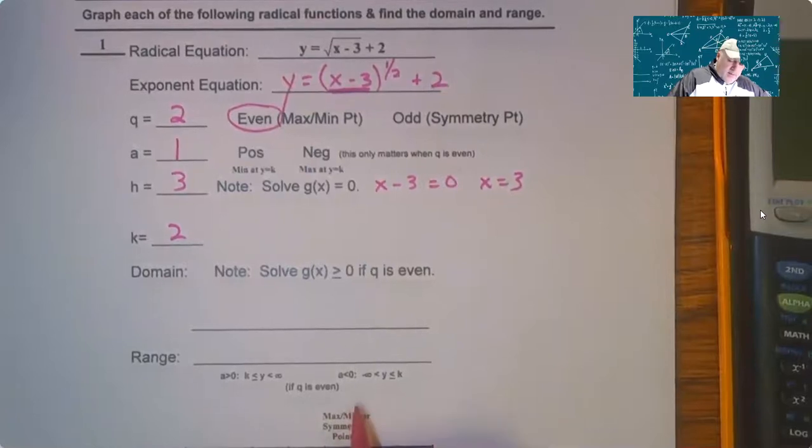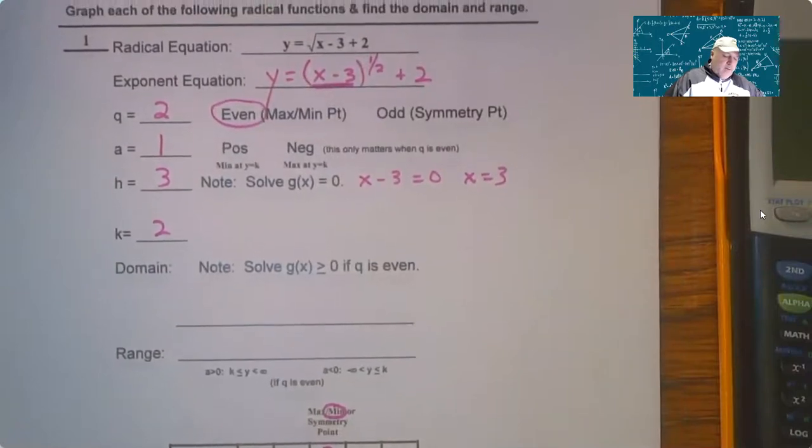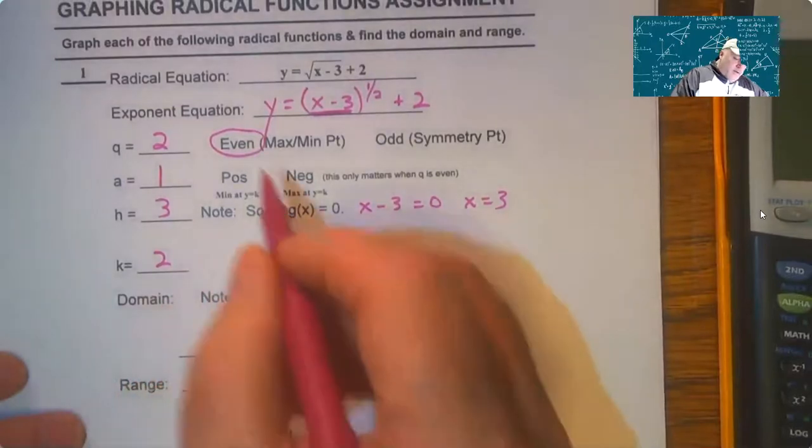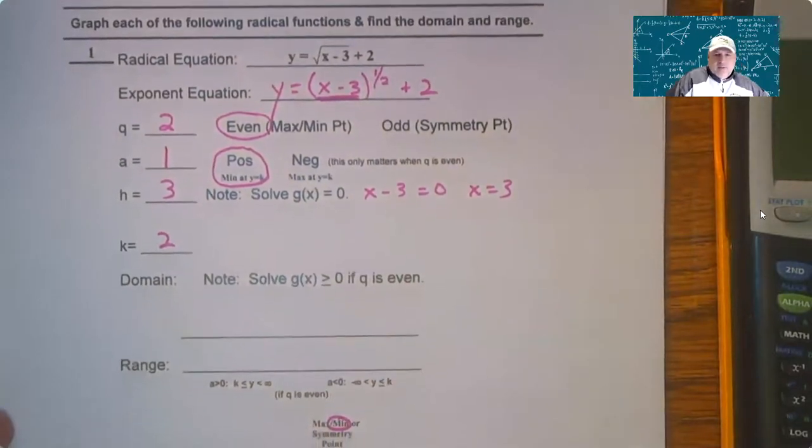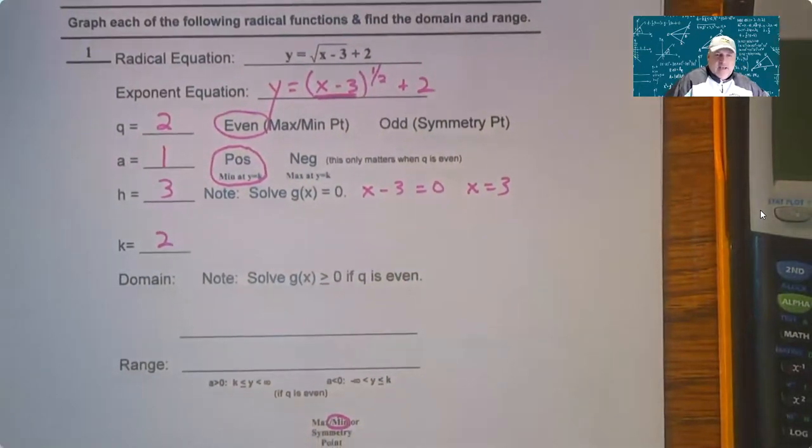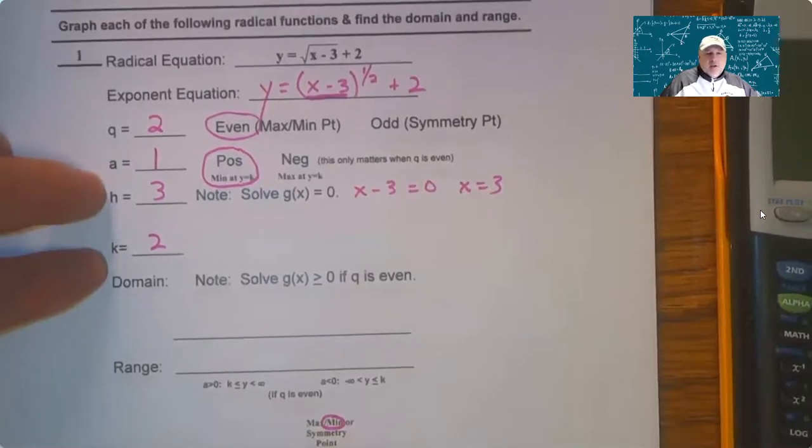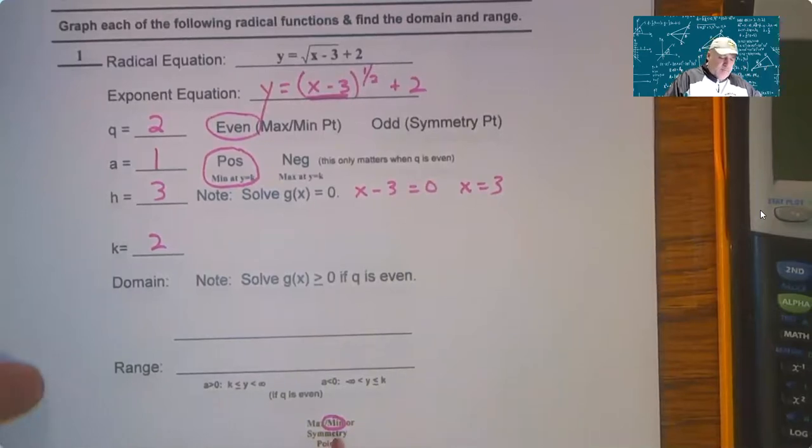How do we know that? Well, A is 1, it's positive, so it's a minimum. And I want to say some of this only matters when Q is even. So if Q is odd, a lot of this is just we figure the symmetry point out. You always figure out H and K always. But if Q is odd, then this becomes really easy. The domain and range is all reals.